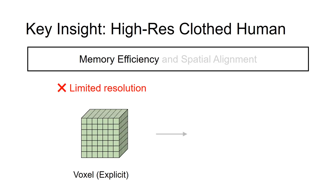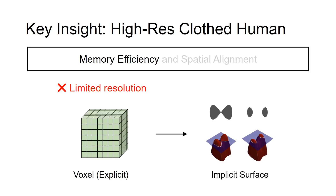In this work, we use an implicit surface representation, where a surface is represented as a level set of a continuous scalar field in the 3D space. This memory-efficient representation allows us to learn to predict a high-resolution surface of an arbitrary topology.